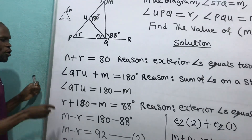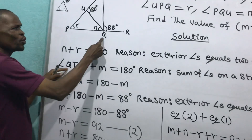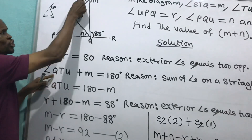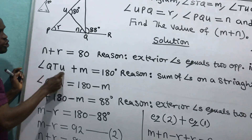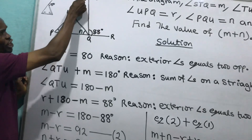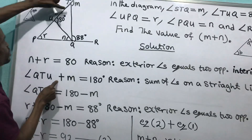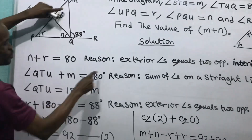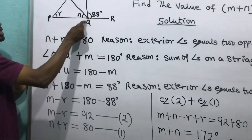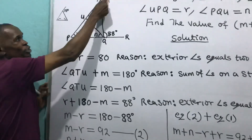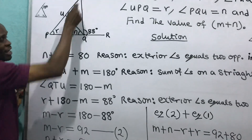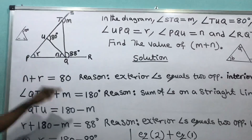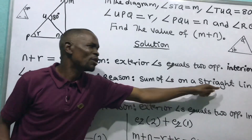After that, I come over to say angle Q-T-U — I'm describing this angle — plus angle A plus angle M equals to 180. My reason: sum of angles on a straight line equals to 180.